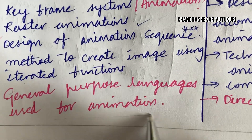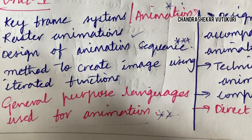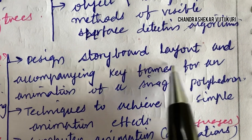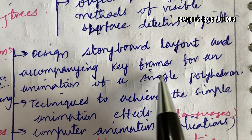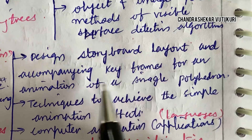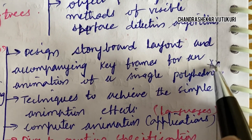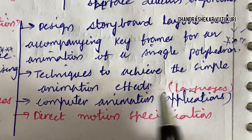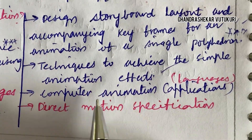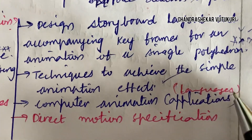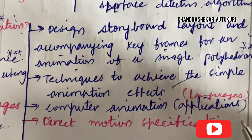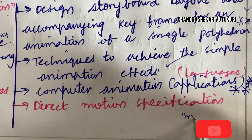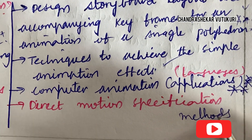General purpose languages used for animation is also set to be a 5-mark question. You should work out this unit immediately. Design storyboard layout and accompanying keyframes for an animation of a single polyhedron — such questions may be asked directly for 10 marks. Techniques to achieve simple animation effects, as well as computer animation languages and their applications, is set to be a sure question. Motion specification methods is also set to be very, very important.